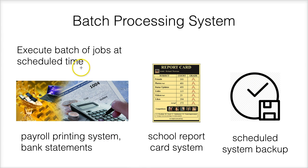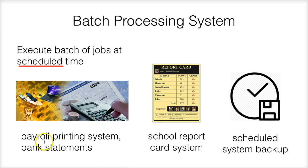The characteristics of a batch processing system are that they execute jobs at scheduled time, at regular time intervals. Examples of batch processing systems include the payroll printing system, bank statements, the school report card, and the UT report card. These are batch processing systems because they execute at scheduled time. Scheduled system backup is also an example of a batch system.